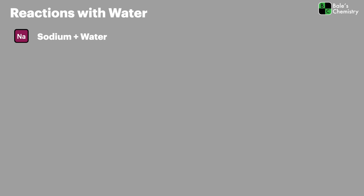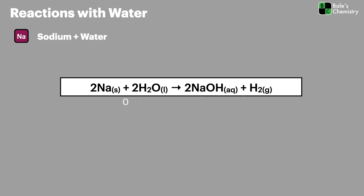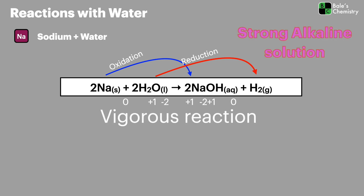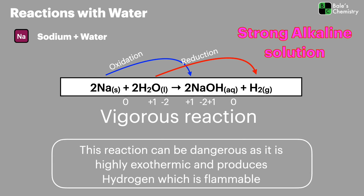Starting with the reactions with water: sodium reacts to form sodium hydroxide. This reaction is seen many times through GCSE and is often used to demonstrate the reactivity of group one metals with water. Looking at the oxidation states, sodium has been oxidized and hydrogen has been reduced. This reaction is very vigorous, produces a very strong alkali solution, is highly exothermic, and produces flammable hydrogen gas.